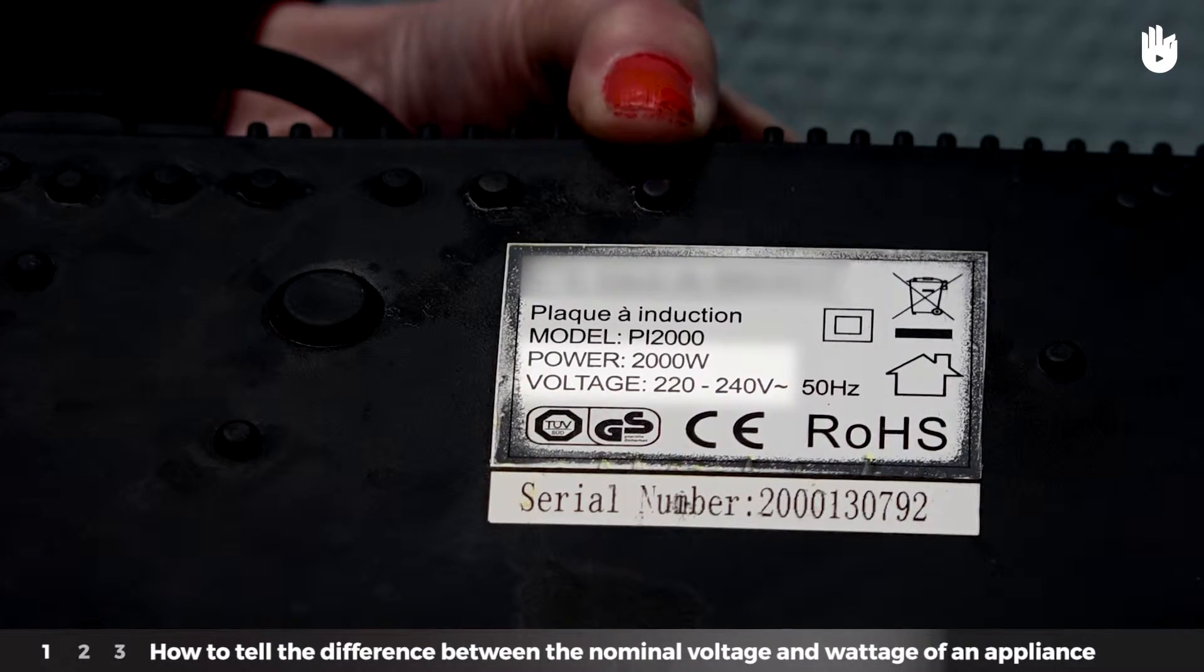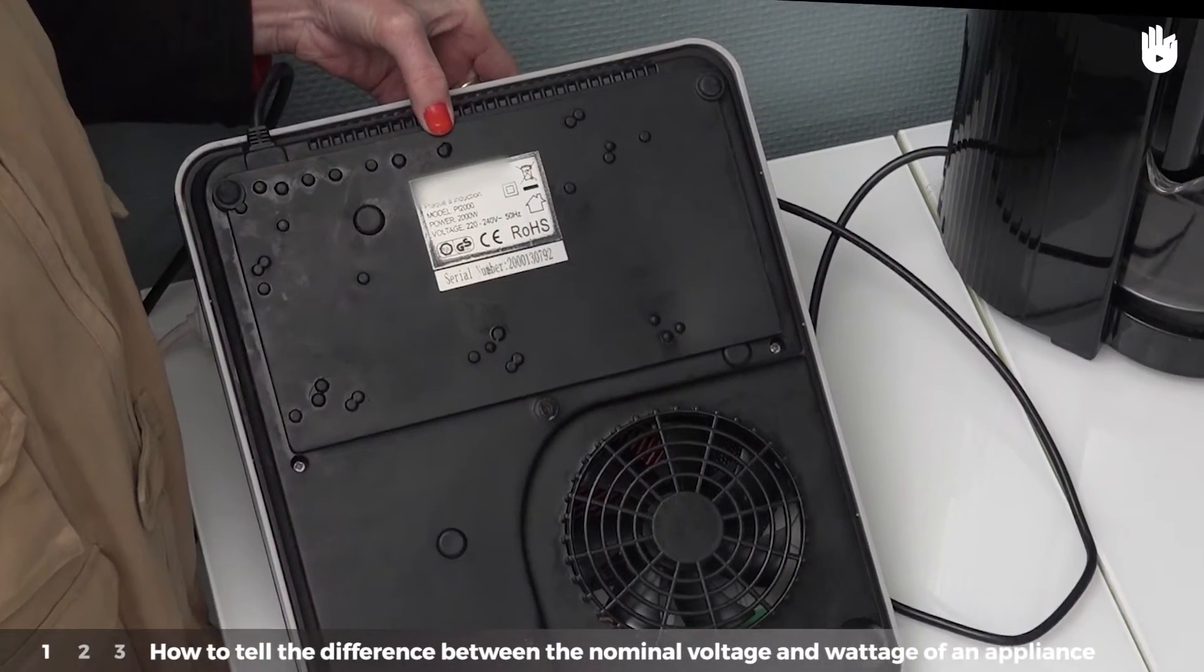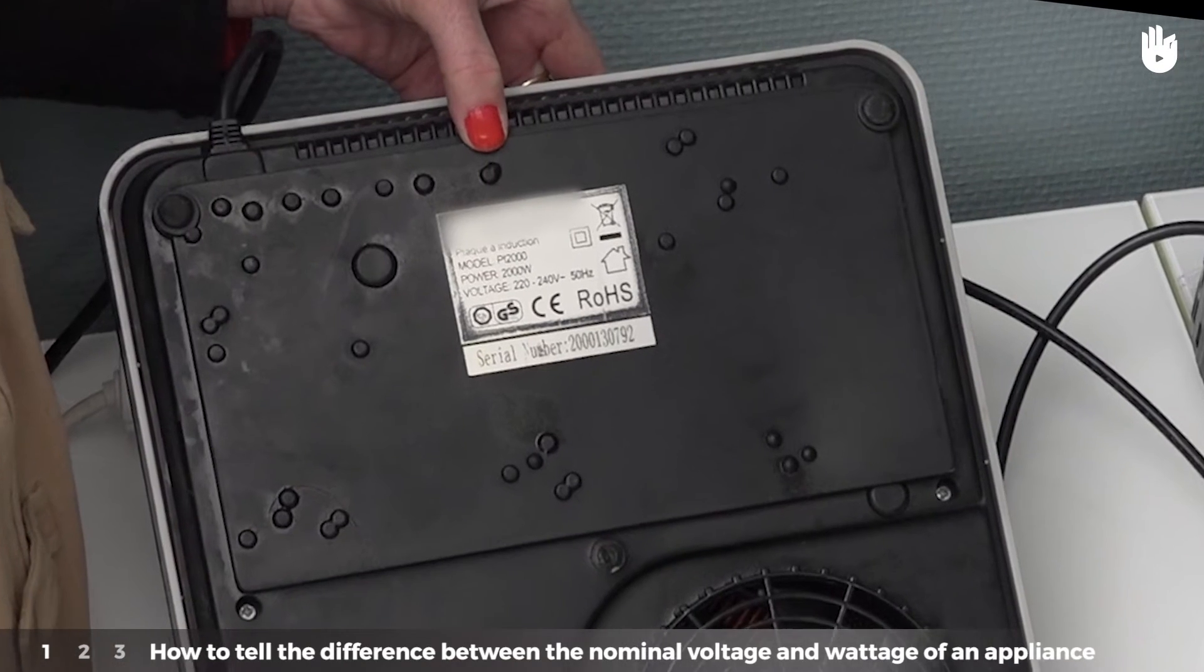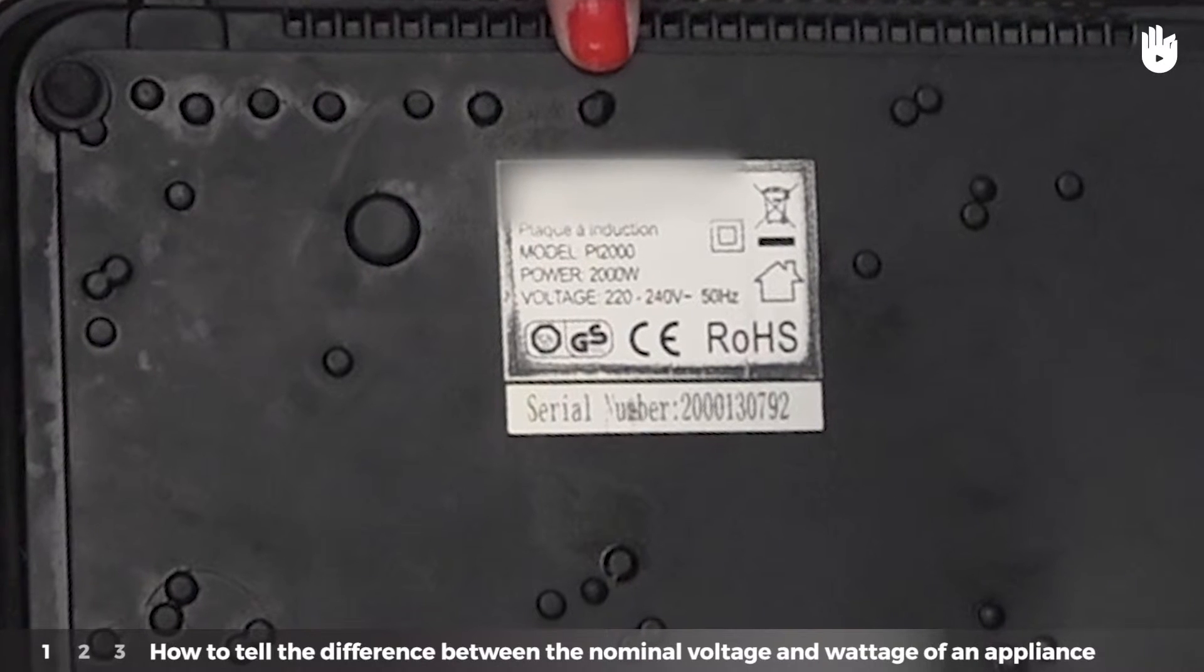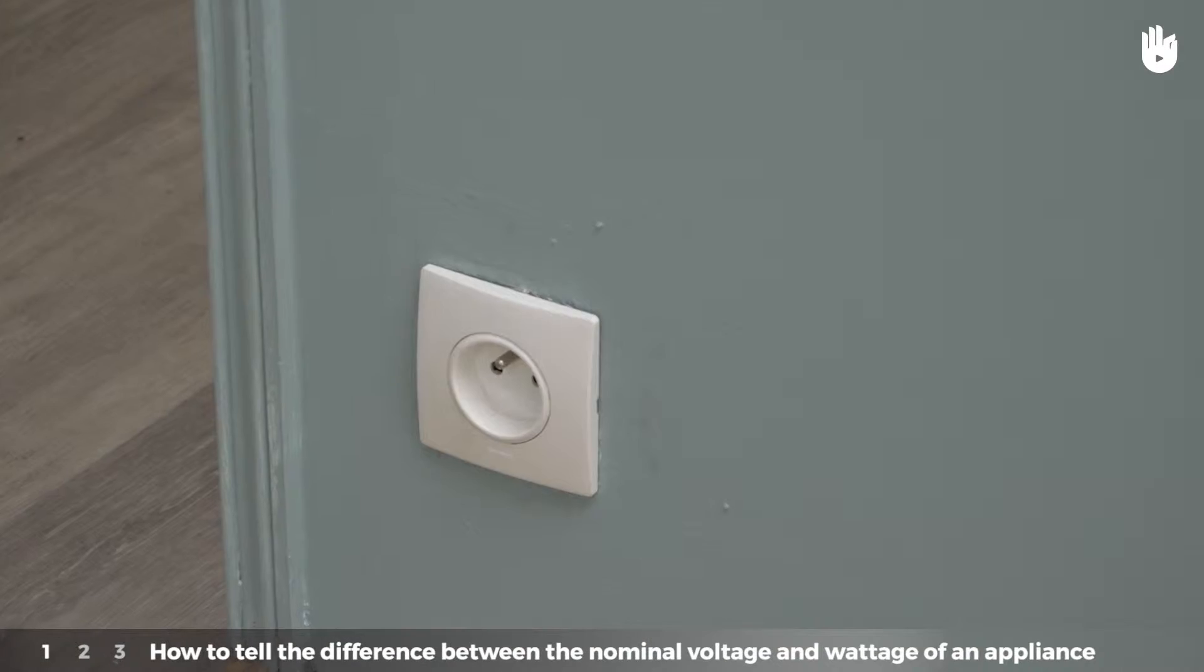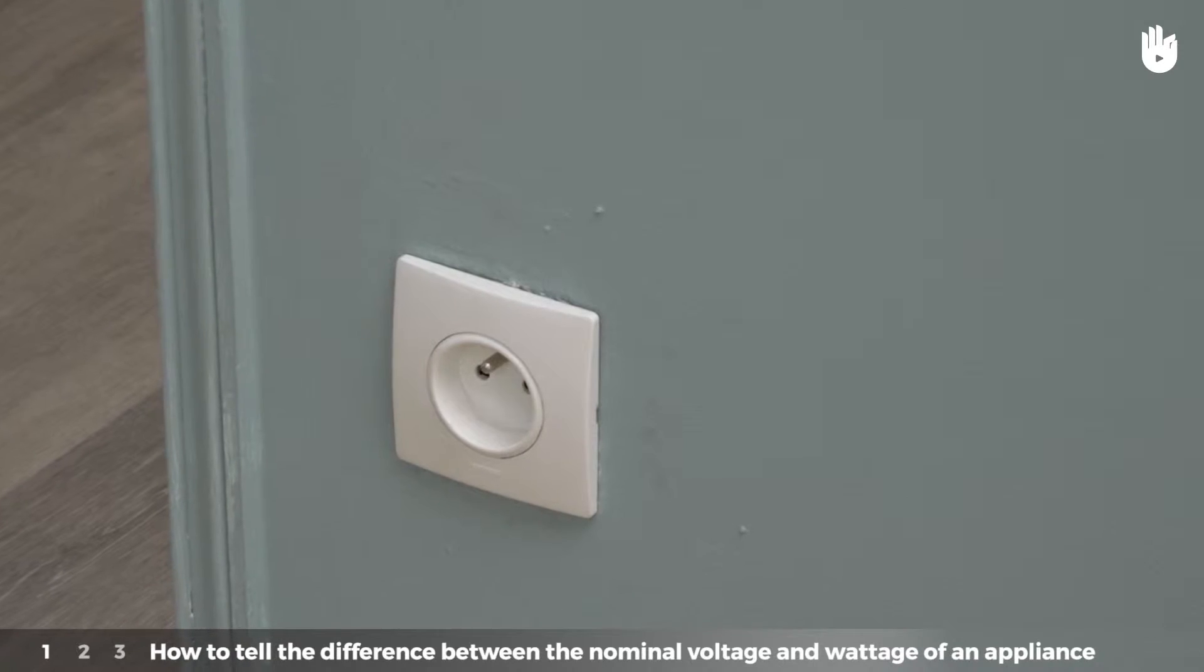Step 1. How to tell the difference between the nominal voltage and wattage of an appliance. The nominal voltage is the normal voltage for use of an appliance. It is expressed in volts. This information can be found on the appliance's data plate. It must correspond to the efficiency level of the voltage of the terminals of the electrical socket where the appliance is plugged in.